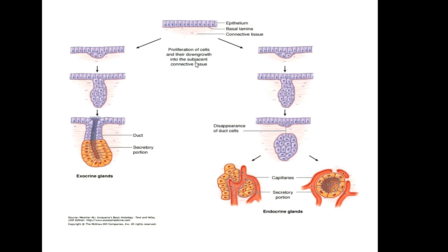The single layer of epithelium on the basal lamina then proceeds further into the adjacent connective tissue and the gland formation takes place. This is the duct portion and this is the secretory portion.